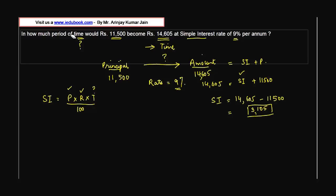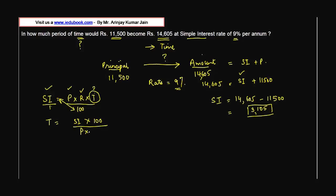Now we know three things — principal, rate, and simple interest — so the only variable left is time. By cross-multiplication, Time = (Simple Interest × 100) / (Principal × Rate) = (3,105 × 100) / (11,500 × 9).